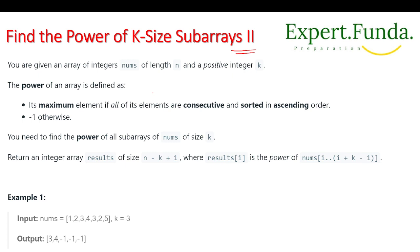The question says we are given an array of integers called nums, with size n, and a positive number k. The power of an array is defined as the maximum element of all its elements if they are consecutive and sorted in ascending order, otherwise it returns minus one. What we are doing is finding all the subarrays, checking if each subarray is consecutive and sorted, and if so, finding the maximum element; otherwise returning minus one.